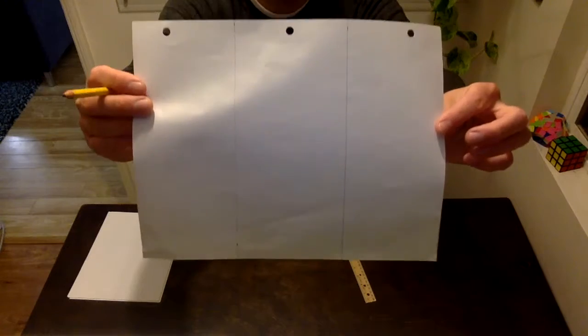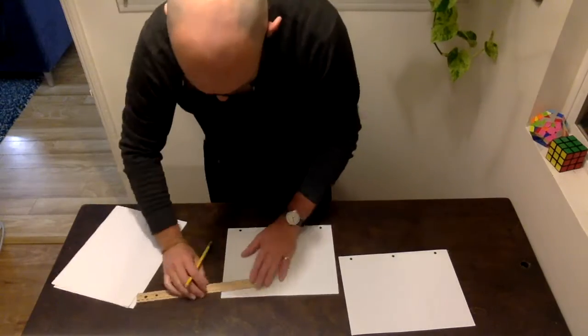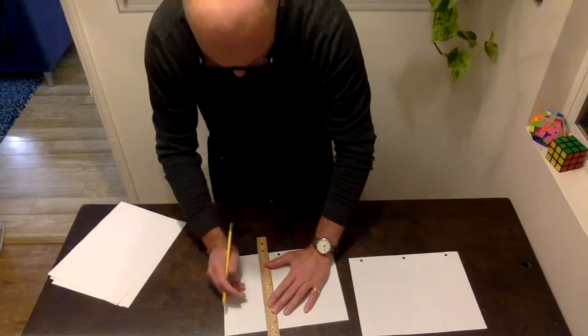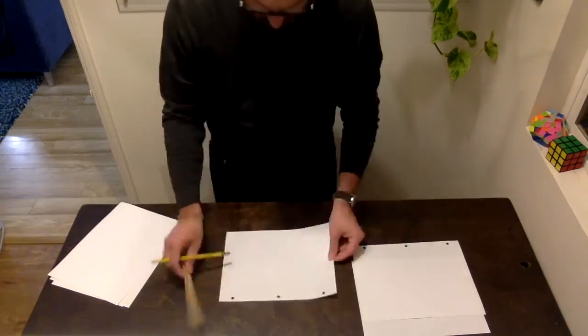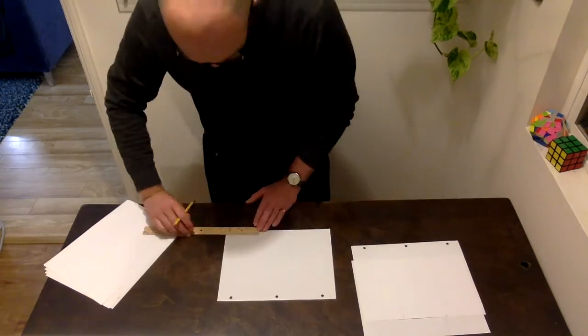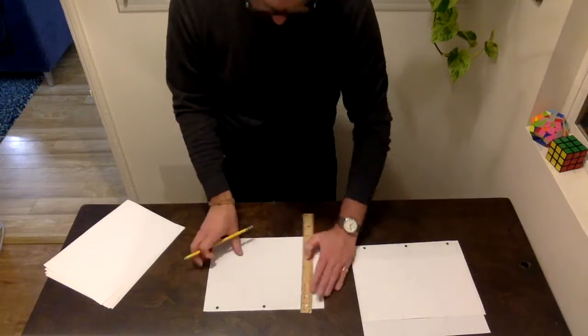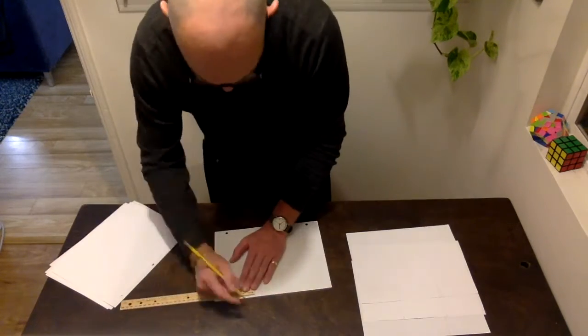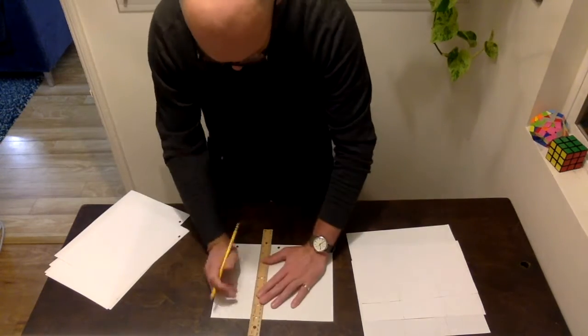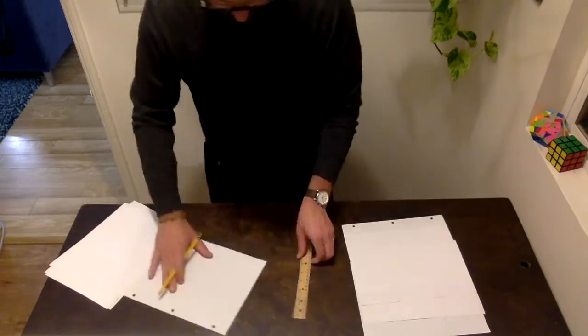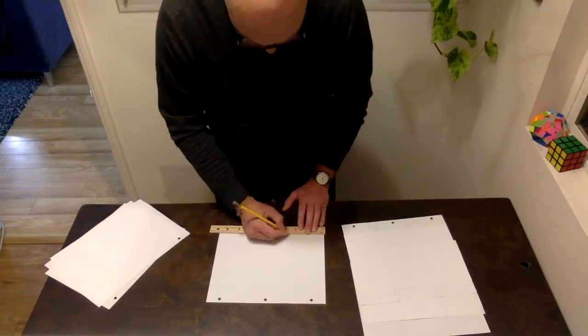I'm gonna repeat that same process for all eight sheets of paper. This isn't perfect thirds - that middle piece is 10 centimeters - but that's okay.